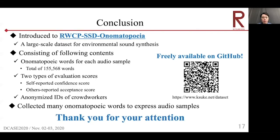Today I introduced a large-scale dataset for environmental sound named RWCP SSD Onomatopoeia. This dataset consists of three contents: onomatopoeic words for each audio sample, two types of variation scores for onomatopoeic words, and anonymized IDs of crowd workers. From the analysis using confidence scores and acceptance scores, we collected many onomatopoeic words to express audio samples. For future work, we will also collect onomatopoeic words from native speakers of other languages. Thank you for your attention.